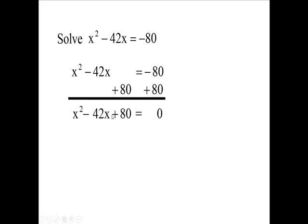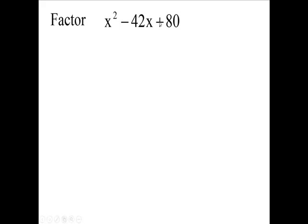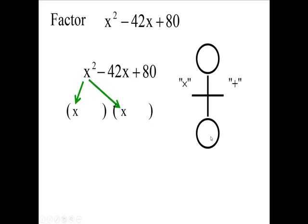So we have to factor x squared minus 42x plus 80. I have two polynomials or two binomials multiplied together to give you this, and this is going to equal zero. So we're going to factor this now. Copy down the x. Get your template all set up.